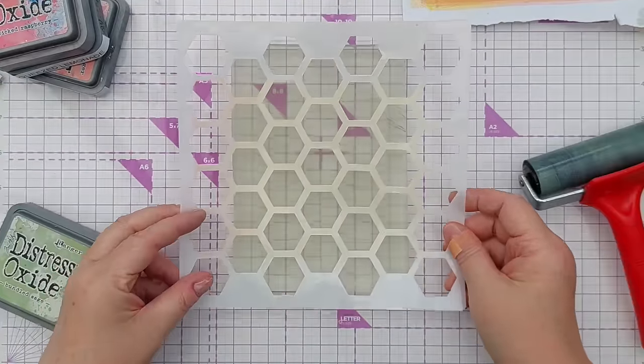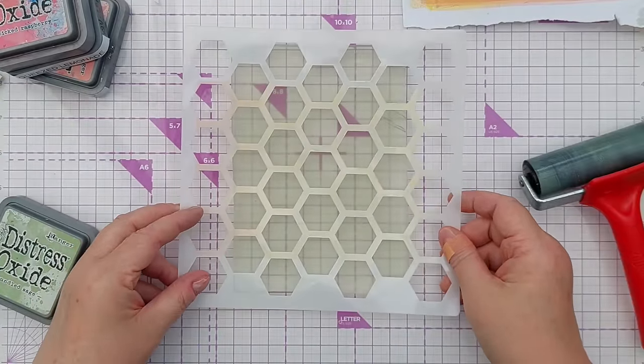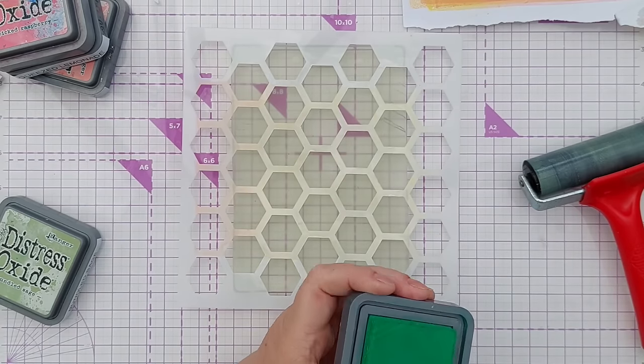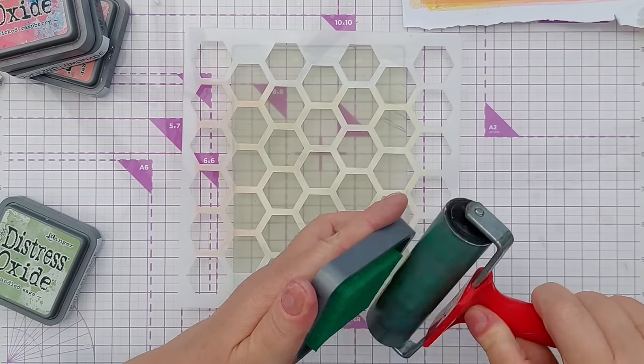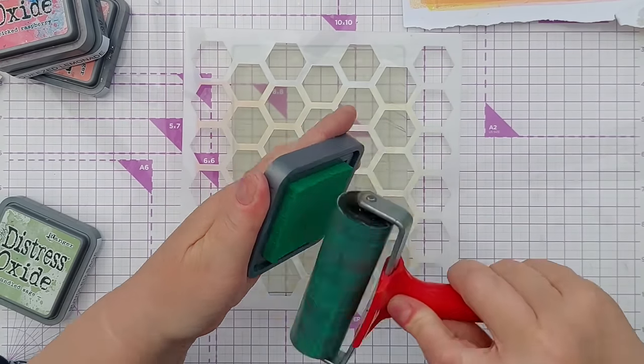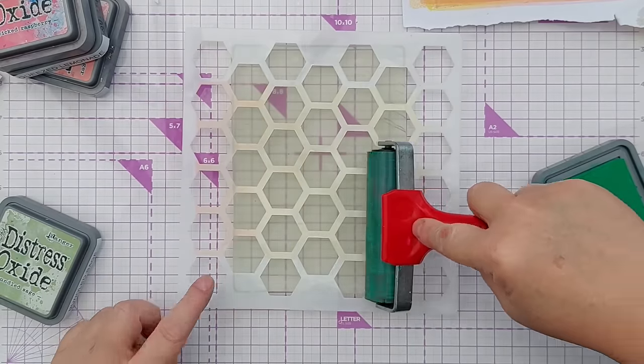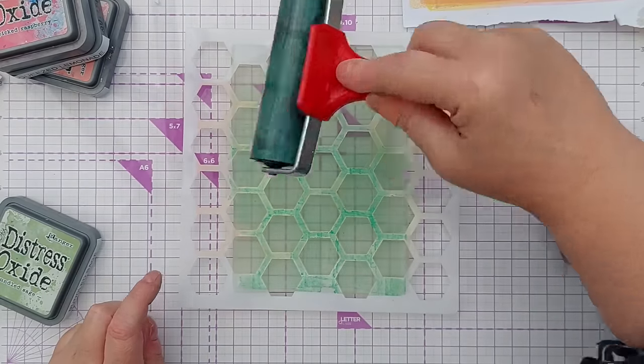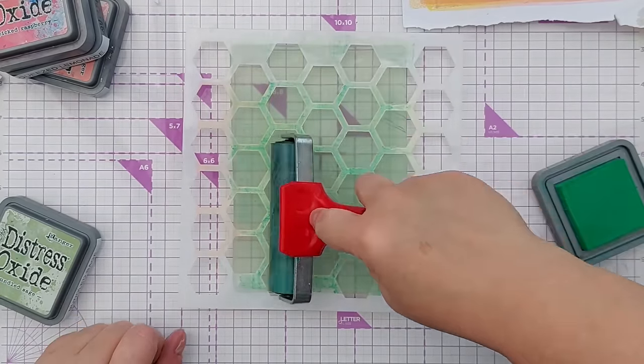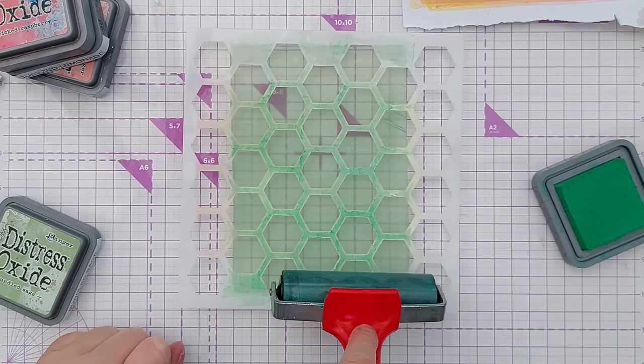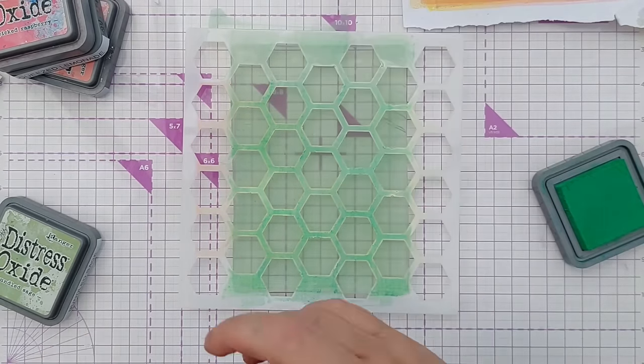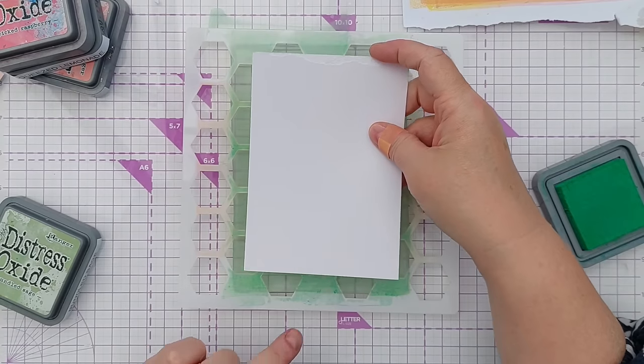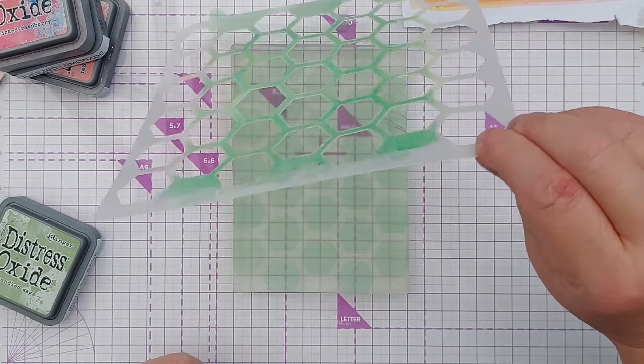So I've put some bundled sage back on here, I'm gonna add this stencil and then I'm gonna get a bit more green, a different green, and add some to my brayer like this and roll over the stencil. Still got a bit of ink from when we did the first stencil technique. That's okay.